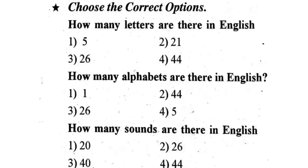Next question: How many letters are there in English? First one, 1. Second one, 21. Third one, 26. Fourth one, 44. The correct answer is third one — 26 letters.